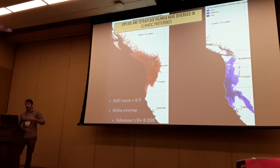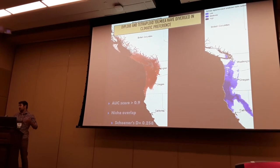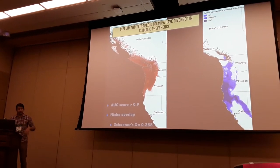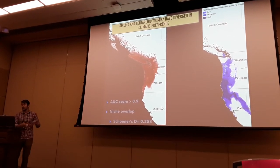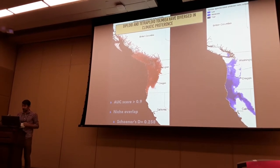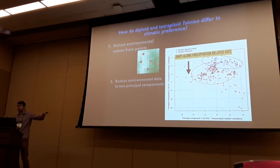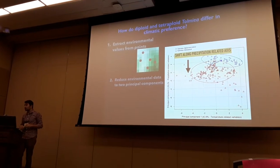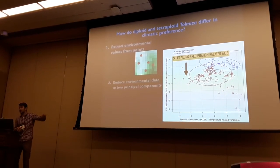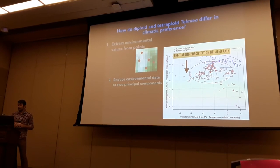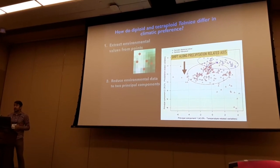One of the first questions I asked was: these plants are occurring allopatrically — are they doing so just by chance, or do they actually have separate niche requirements? Some work I presented a few years ago looked at whether there was niche divergence, and there was some abiotic niche divergence between the diploid and the polyploid. The tetraploid populations are shifted along the y-axis away from the diploid centroid, and this axis is predominantly explained by precipitation-related variables.